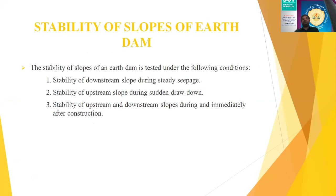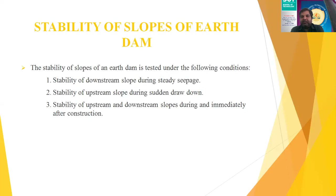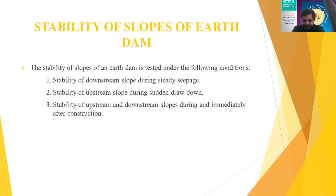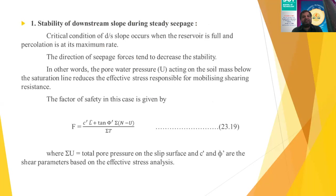The stability of slopes on an earthen dam. When you analyze the stability of slopes of an earthen dam, the following conditions generally arise: Number one, the stability of downstream slope during steady seepage conditions. Second, the stability of upstream slope during sudden drawdown conditions. And third, the stability of upstream and downstream slope during and immediately after construction. Let us see these conditions one by one.